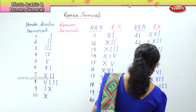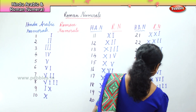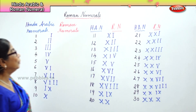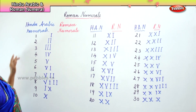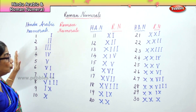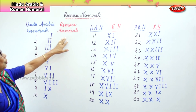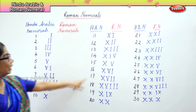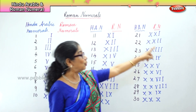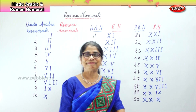So we learned to build the Roman numerals according to the Hindu-Arabic numerals. We learned how to build Roman numerals one to ten, eleven to twenty, and twenty-one to thirty.